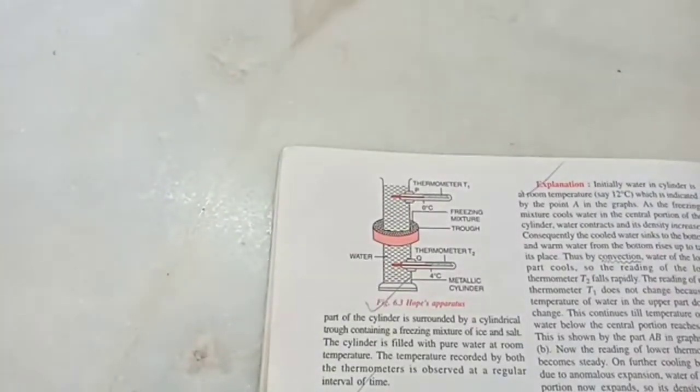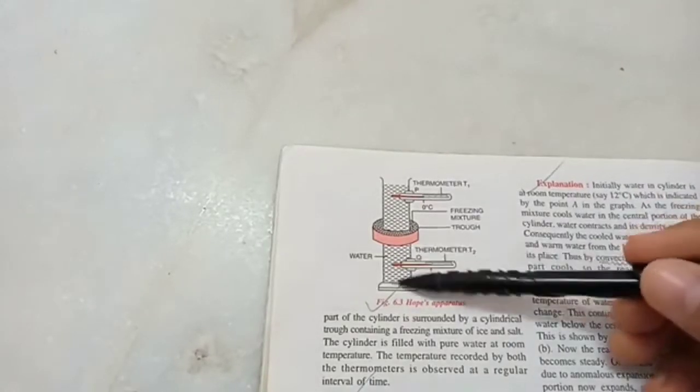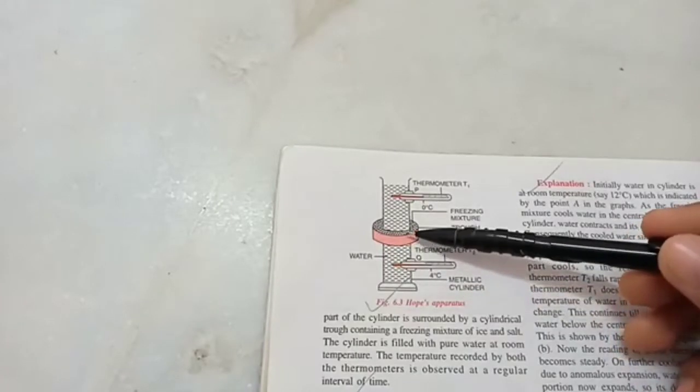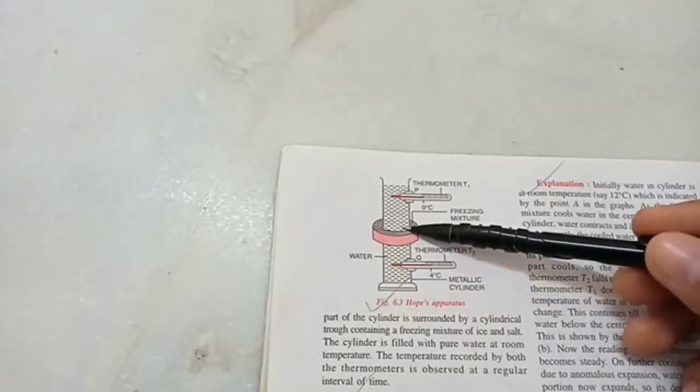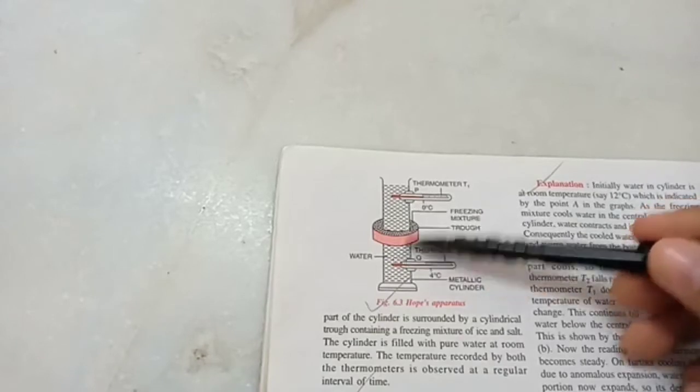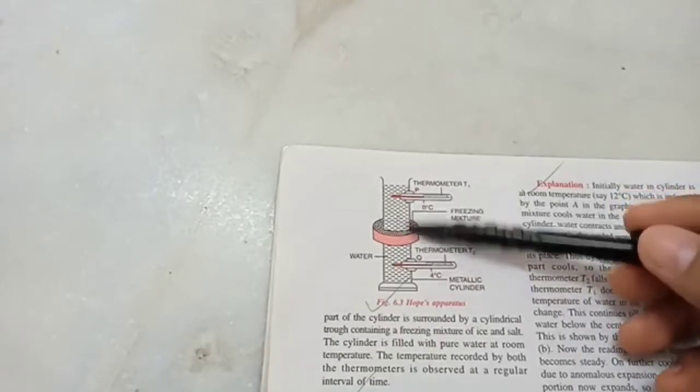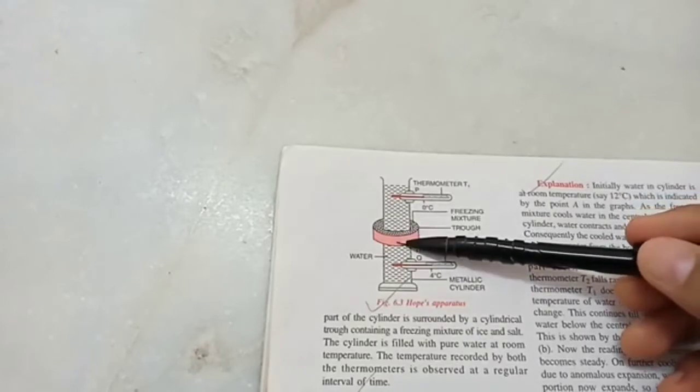Now initially what happens is the temperature of thermometer 1 does not change. It remains as it is, 12 degree Celsius. Whereas the temperature of this thermometer shows a decrease. That means the lower water is cooling faster. Which makes sense because when this freezing mixture absorbs all the heat from the water, the water cools down 12, 11, 10, 9, 8 and cool water is heavier. Cool water is denser. So it sinks at the bottom. The top water is still at 12 degree Celsius. That won't become cold because water is a poor conductor of heat.